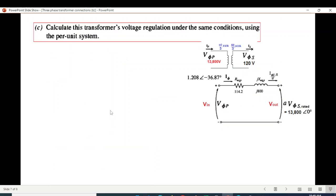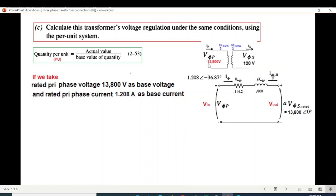The third part: calculate the transformer voltage regulation under same conditions but using per-unit system. Convert and then calculate V phase P. So we know that per unit: we calculate actual value divided by base quantity. Normally primary voltage, currents, etc. are taken as the base. So if we take rated primary phase voltage 13,800 as base and rated primary phase current 1.208 as base, then what? Now voltage 13,800 base, it's the actual value. When we divide by 13,800, the value becomes one angle zero.